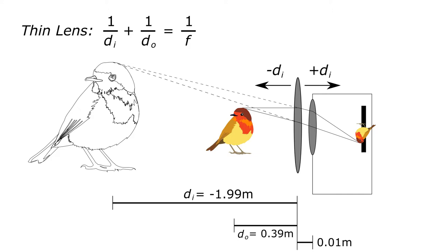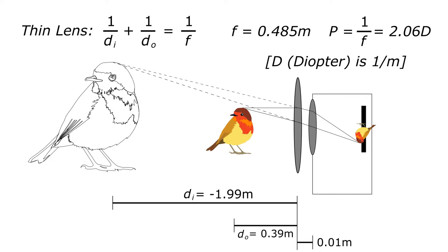Now we just have to take these values and plug them into the thin lens equation and solve for F, the focal length of the lens. Here we get 0.485 meters. We convert that to power, P, by taking 1 over F, and we get about 2.06 diopters. So an optical power of about plus 2 diopters is what we're looking for when we pick out our close-up lens.